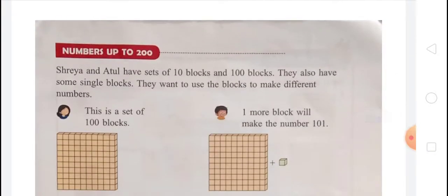Now our topic is numbers up to 200. Shreya and Atul have sets of 10 blocks and 100 blocks, and also some single blocks — they want to use the blocks to make different numbers. A set of 100 blocks means 100. On the ones place there is 0, on the tens place there is 0, and on the hundreds place there is 1. So that is 100.